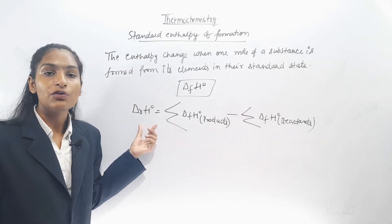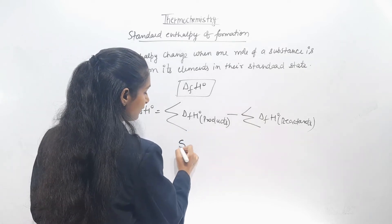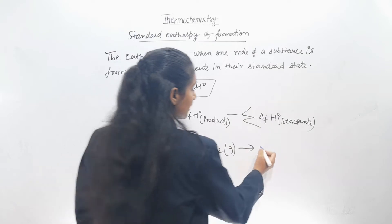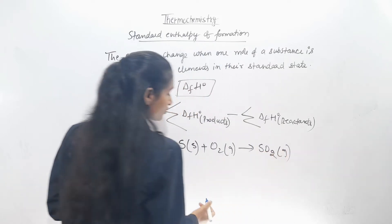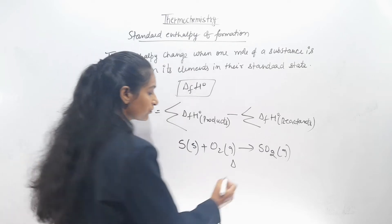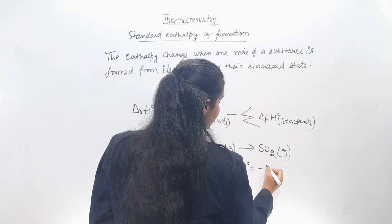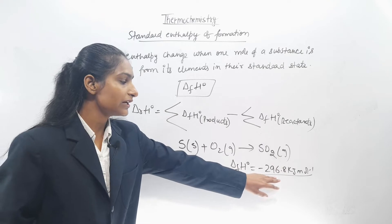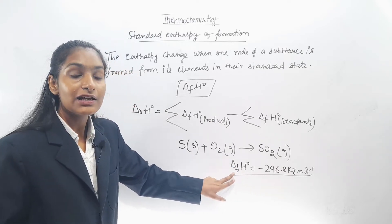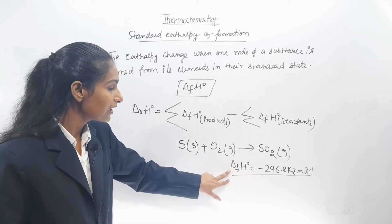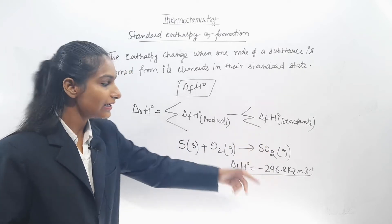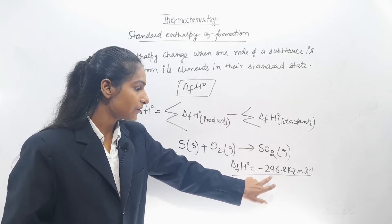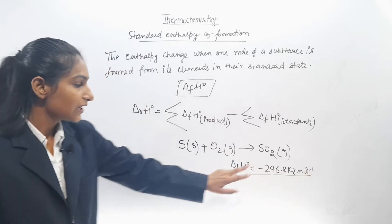For example, if we have S solid plus O2 gas, then it will form SO2 gas. This is Standard Enthalpy of Formation — 1 mole is formed from elements in their standard states. That is why the value of standard enthalpy of formation is minus 296.8 kilojoule per mole.